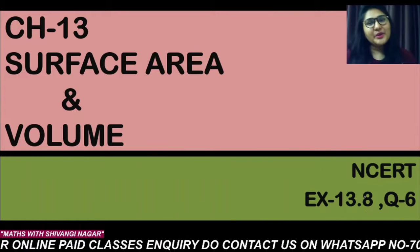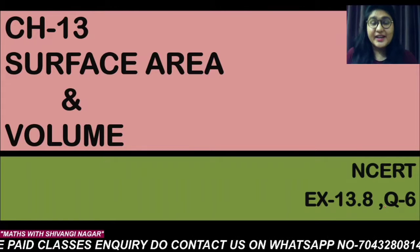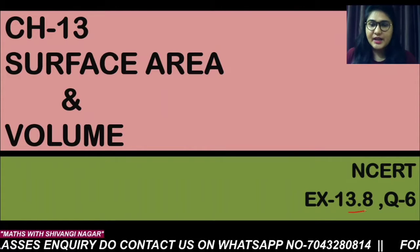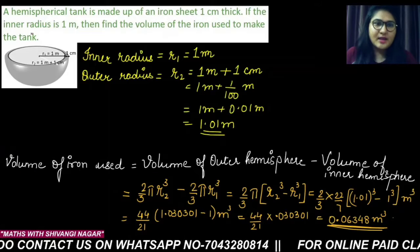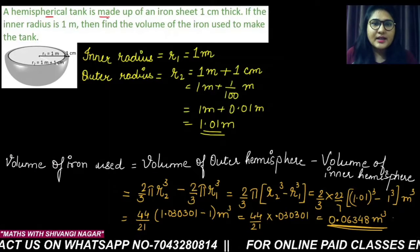Hello everyone, welcome back to my YouTube channel, Maths with Shivangi Nagar. In this video session we will discuss the 13.8 question number 6. So let's start. What the question says: A hemispherical tank is made up of an iron sheet of 1 centimeter thick.